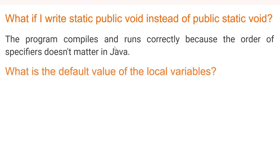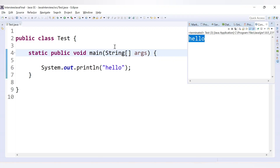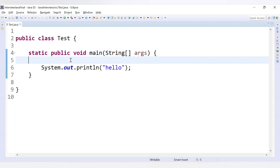The next question is: what is the default value of local variables? In Java there are class/global variables and local variables. Local variables have scope only inside a method. So what is their default value? Local variables are not initialized to any default value — they simply do not have one.